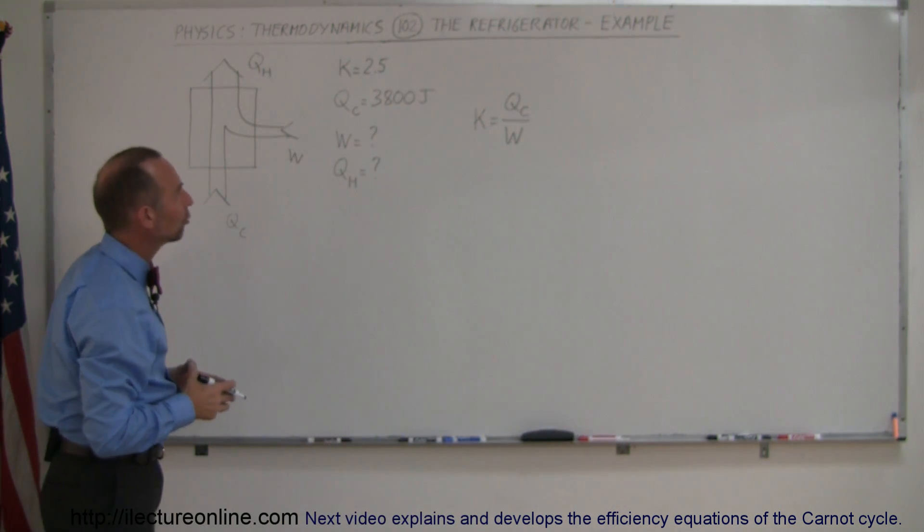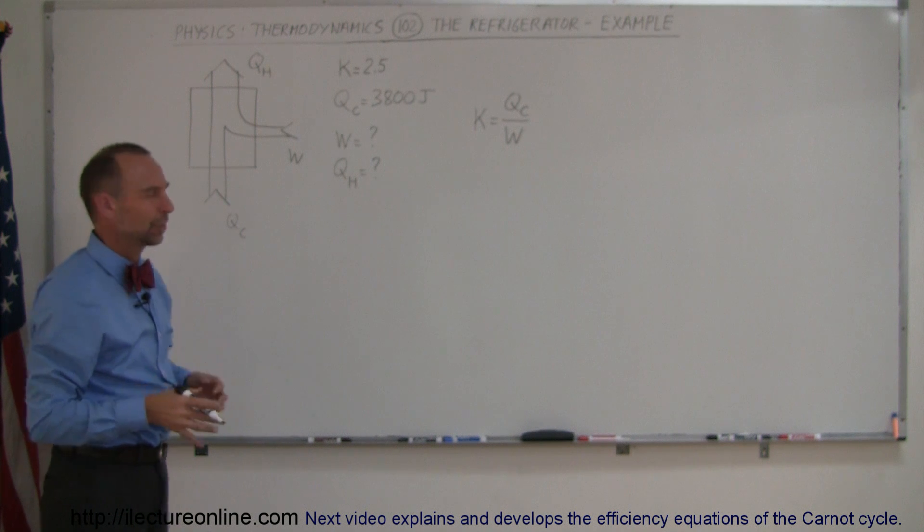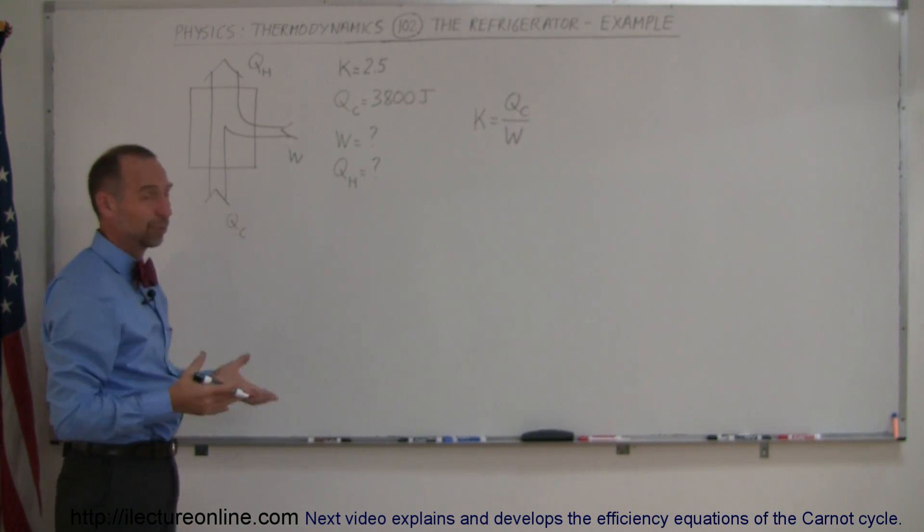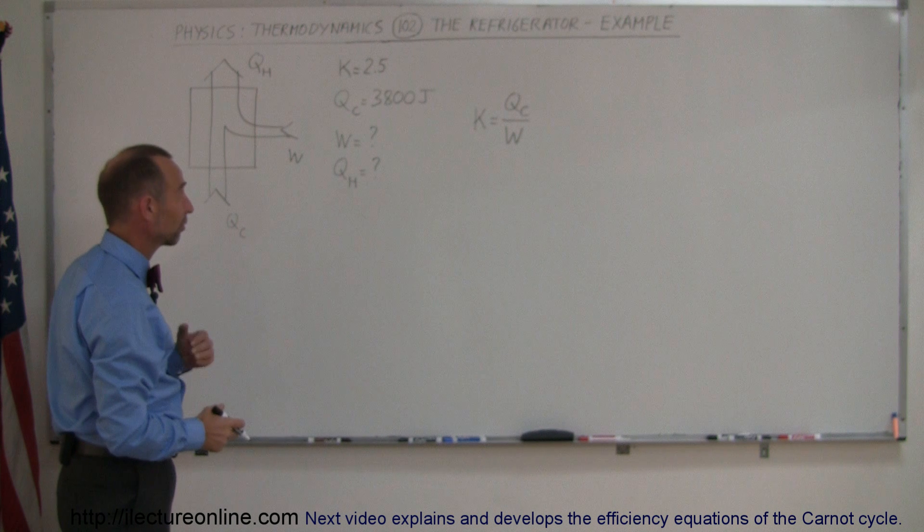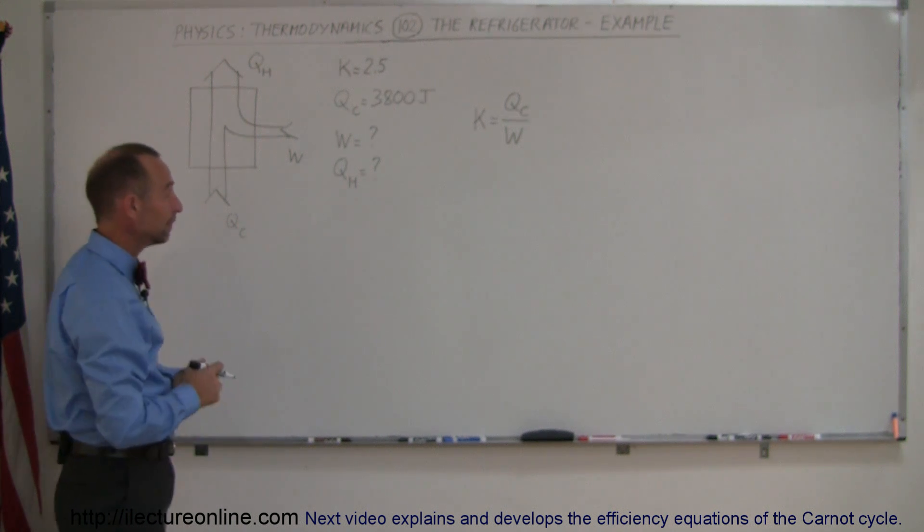In this case, K is 2.5, which is actually pretty low for a refrigerator. If the refrigerator in the store had a performance of 2.5, you wouldn't want to buy it. You want something with better performance. But let's say in our example that's okay.